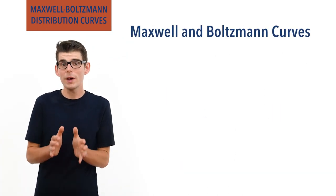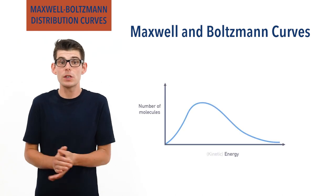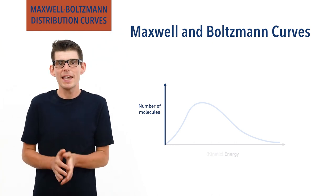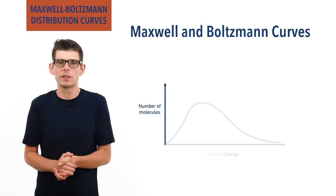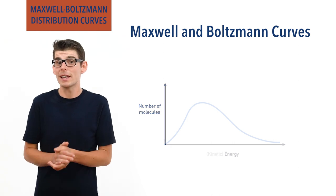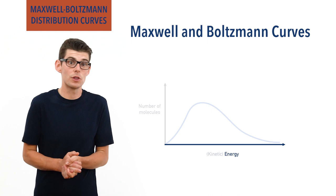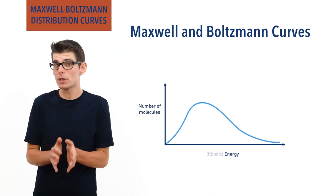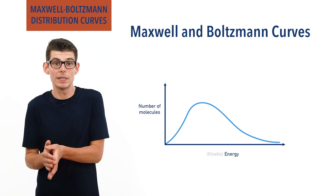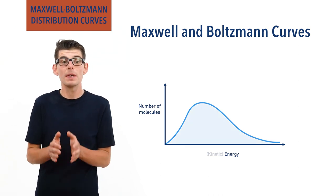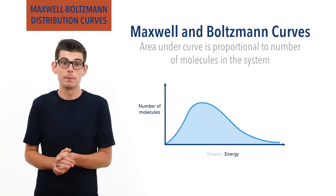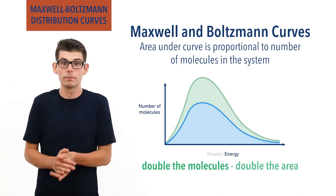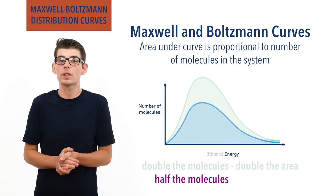Maxwell-Boltzmann distribution curves always have the same basic shape with some key features. The y-axis represents the number or proportion of molecules in the system — it may be labelled in different ways but always refers to the number of molecules. The x-axis represents kinetic energy, sometimes just stated as energy, increasing from left to right. What the curves show us is the number of molecules likely to have a given amount of energy at any one moment in time, with the total area under the whole curve being proportional to the total number of molecules in the system. So if the number of molecules doubles, the area under the curve must also double, and if it halves, the area must also halve.